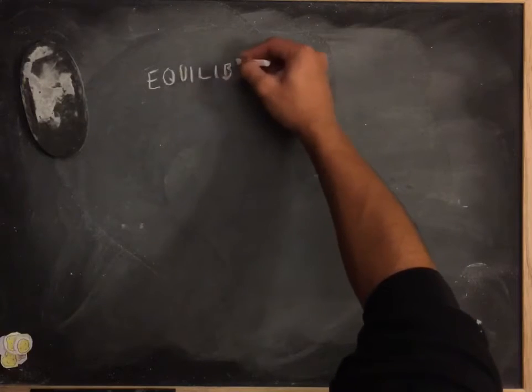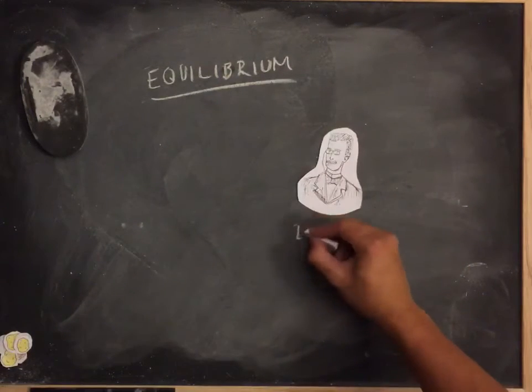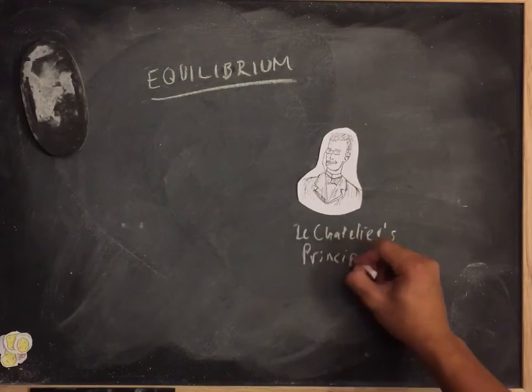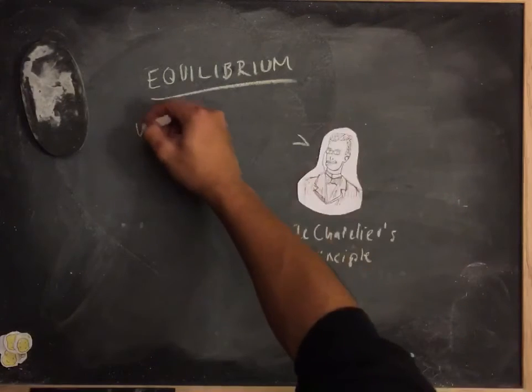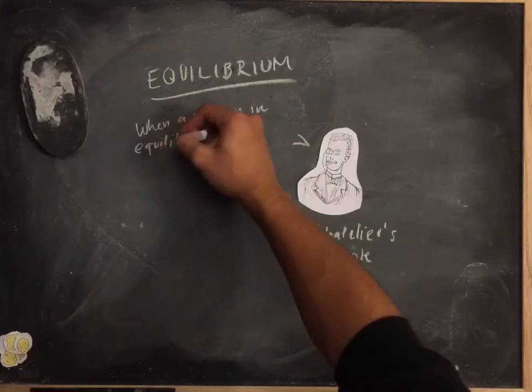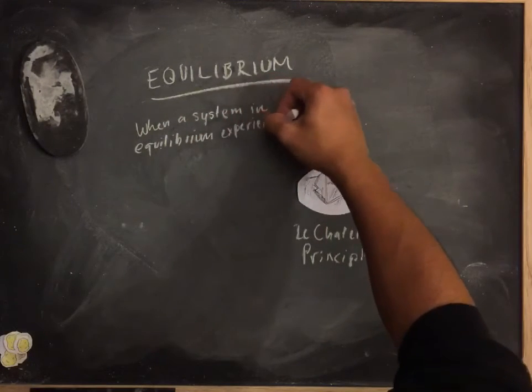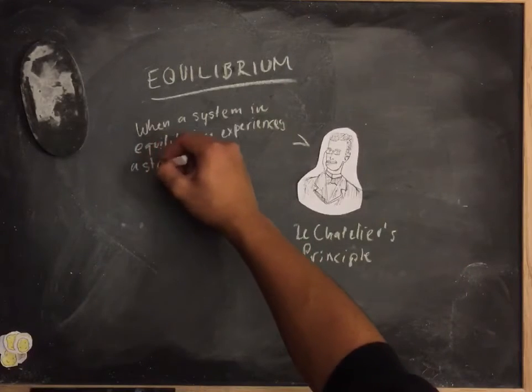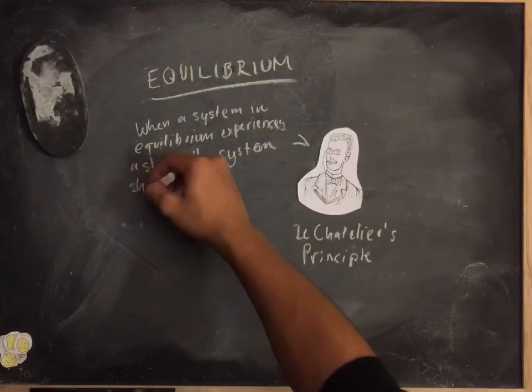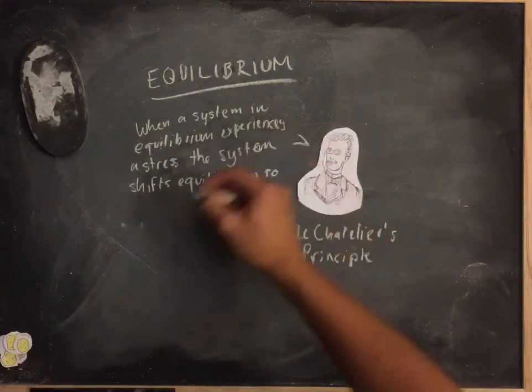When we look at this process of gallstone formation in further detail and think about cholesterol, bile salts, and bile acids all in solution, we can see that the formation of gallstones is just Le Chatelier's principle in effect. So just a quick refresh on the principle: whenever a system in equilibrium experiences a stress, the system then shifts equilibrium in order to compensate for this introduced stress.